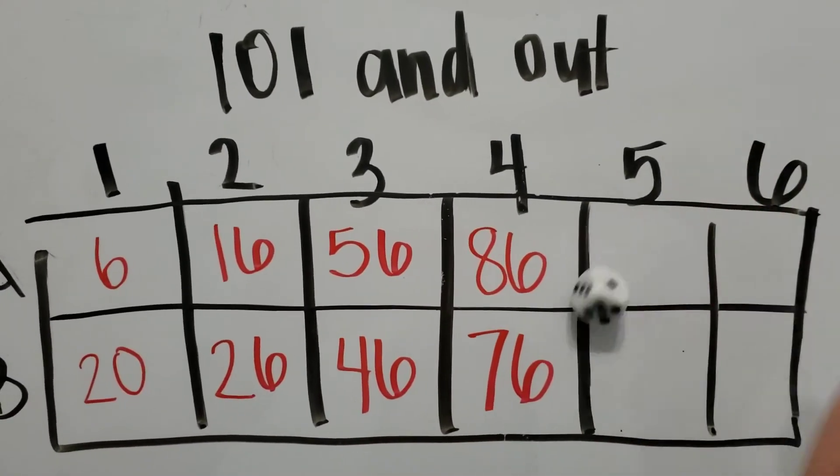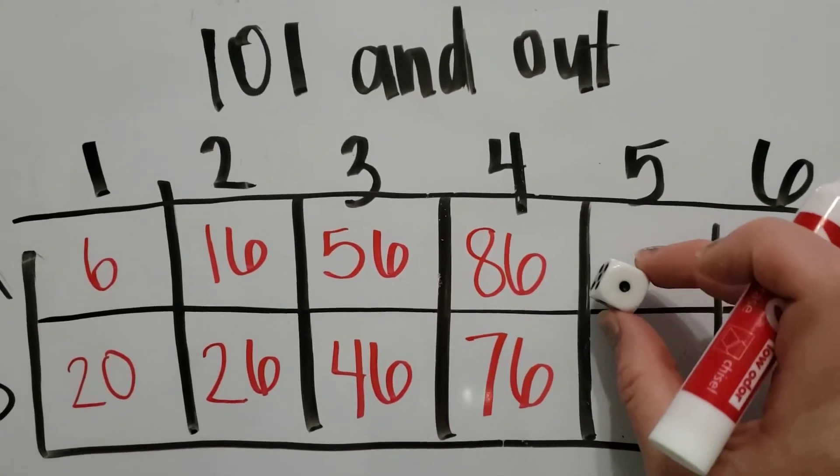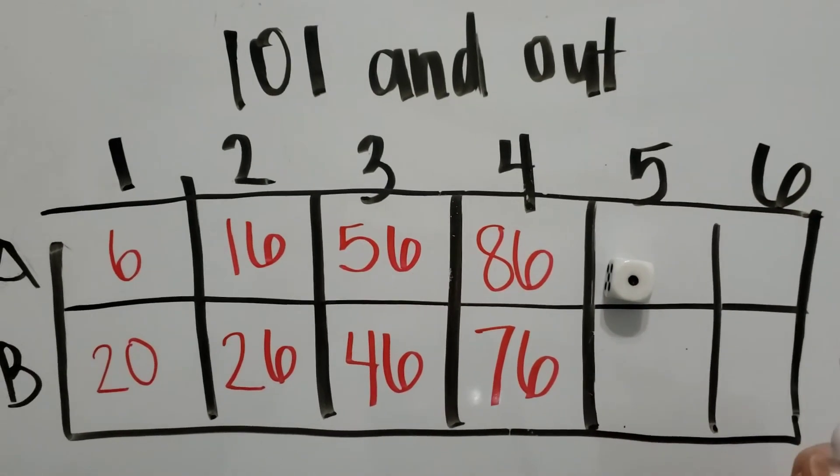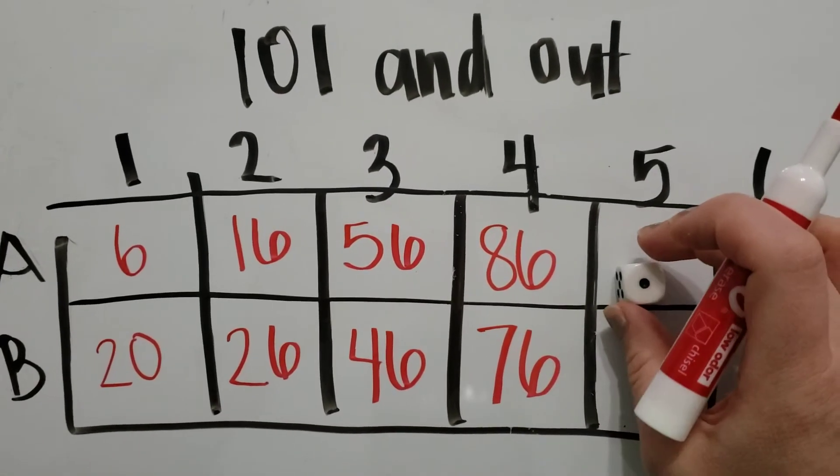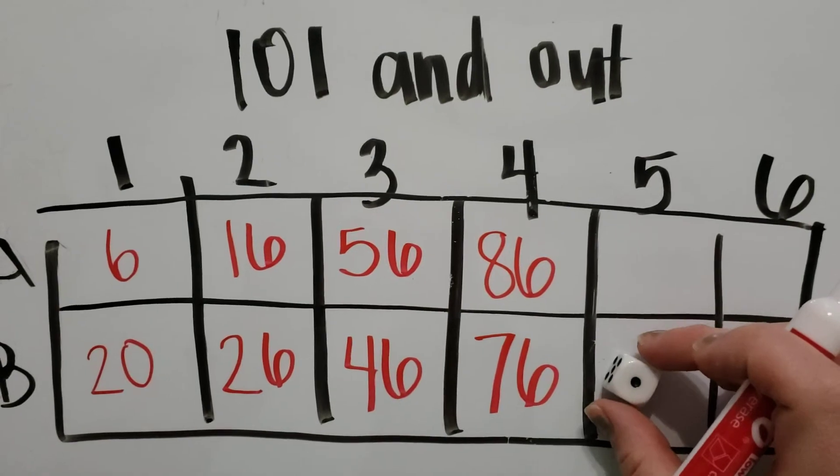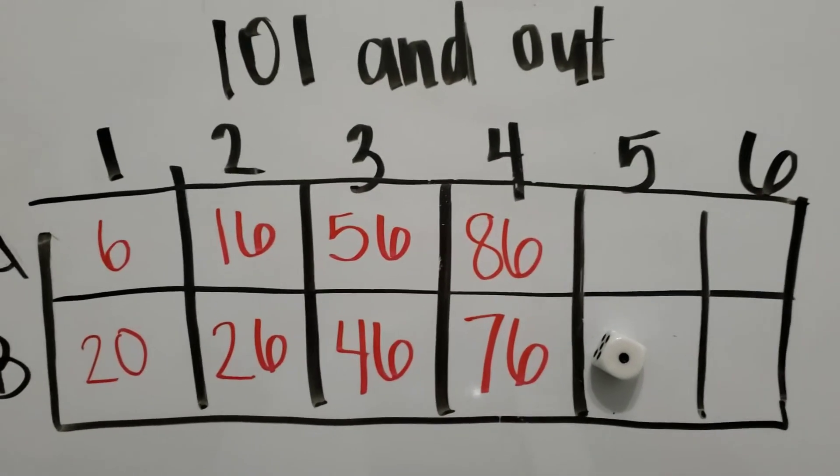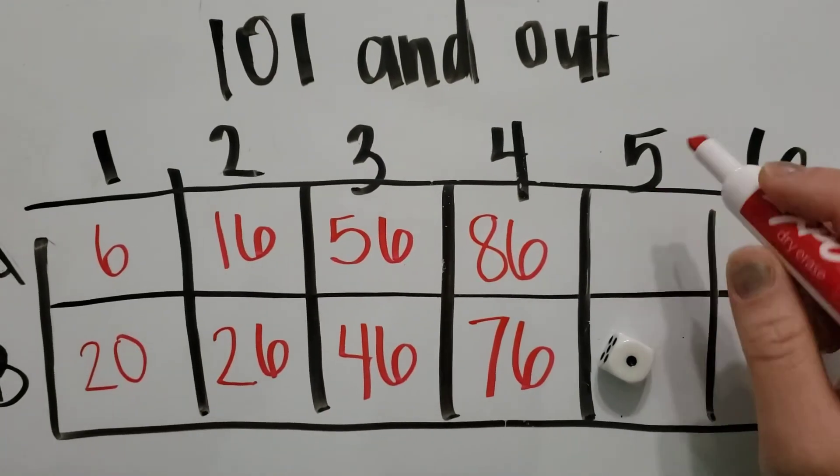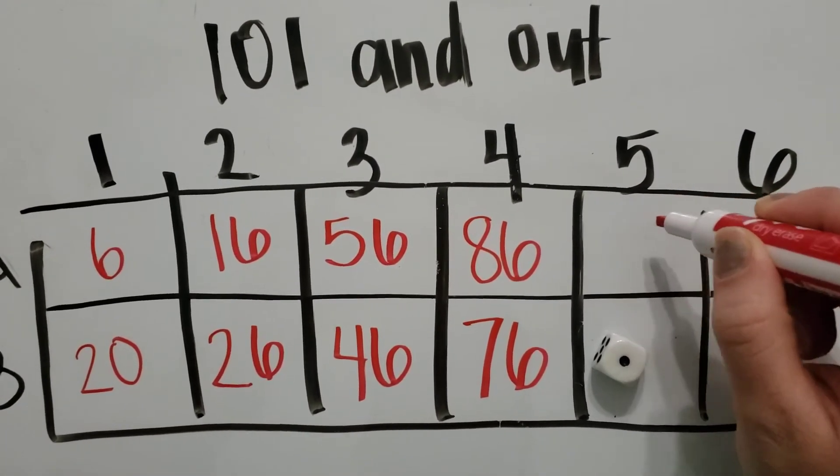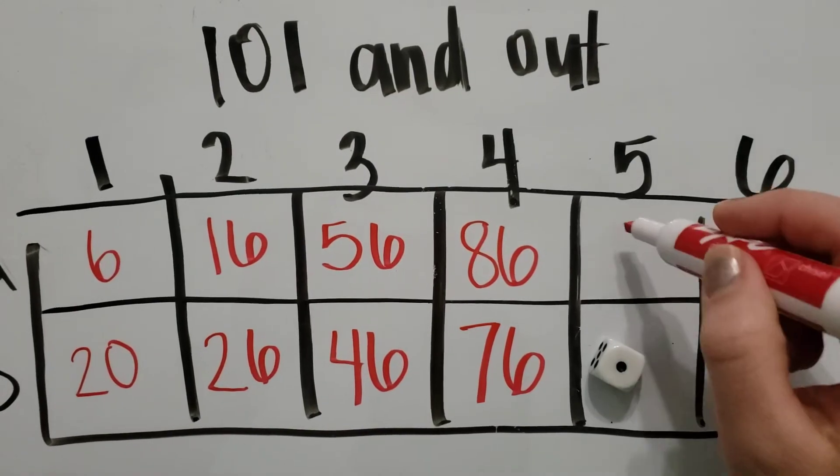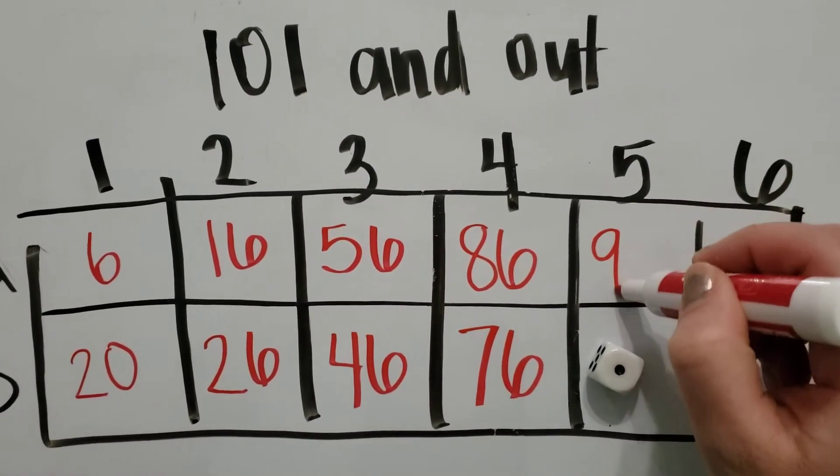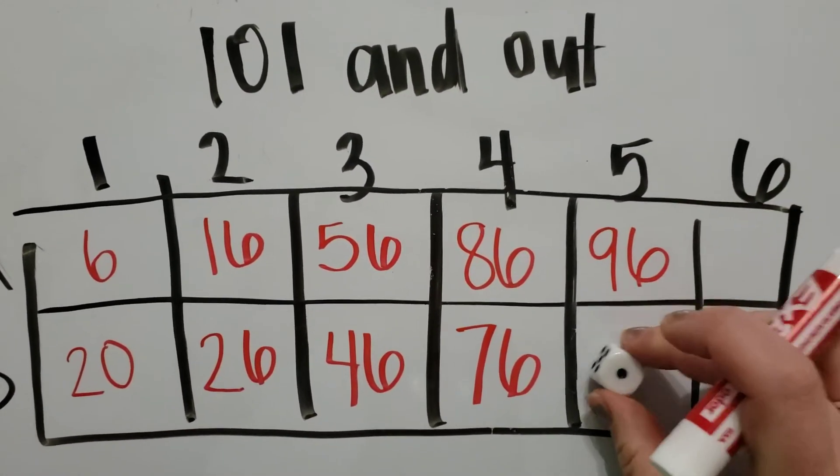Now team A is going to roll the dice and they rolled a one. That can be a one or a 10. I want that to be a 10. That puts me at 96, which would be really close to 100. I could do 87. I'm going to put it at 96 and we'll hope that I don't go over 100.